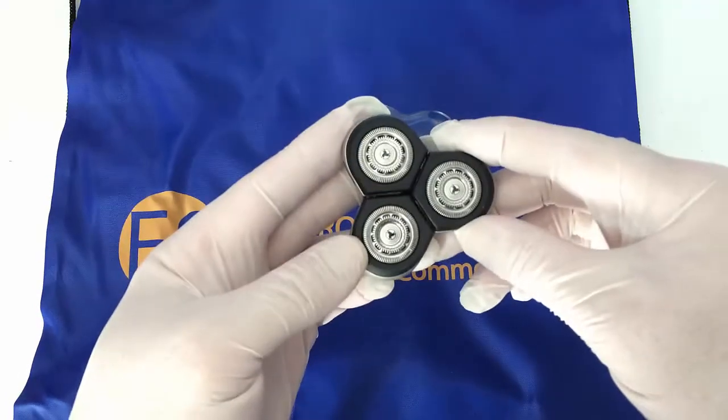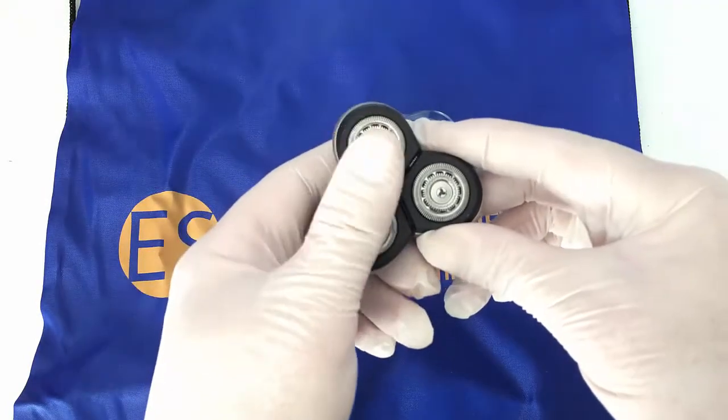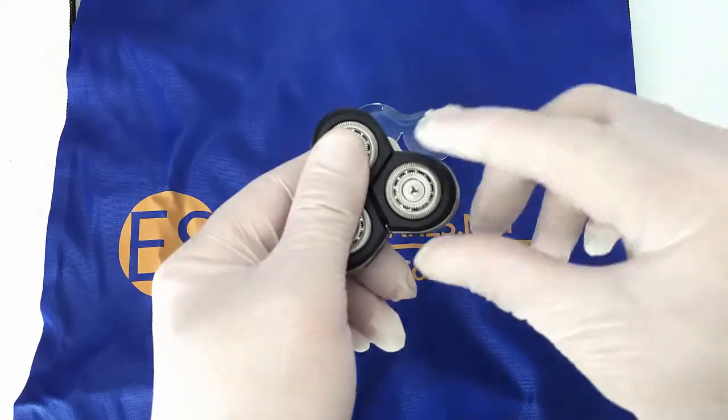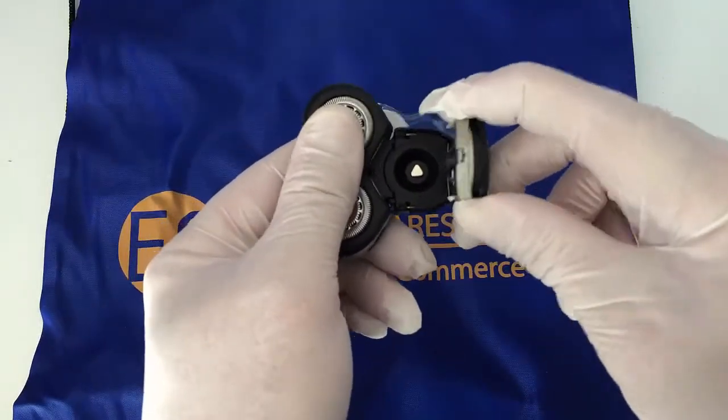Customers have struggled to work out how to open and clean them. To open the head, hold two of the foils down and then raise the other foil gently up to no more than 90 degrees.